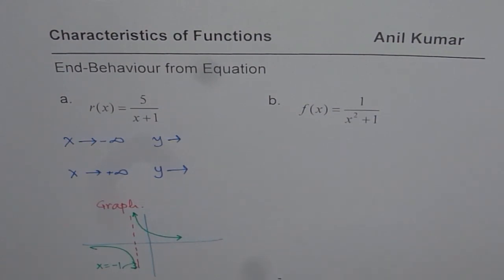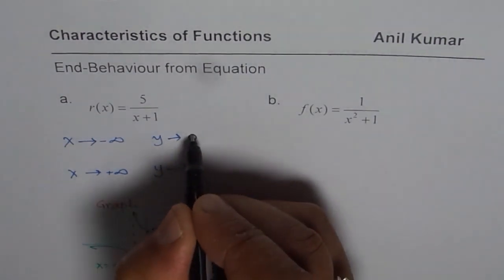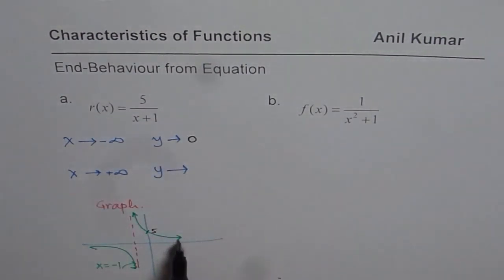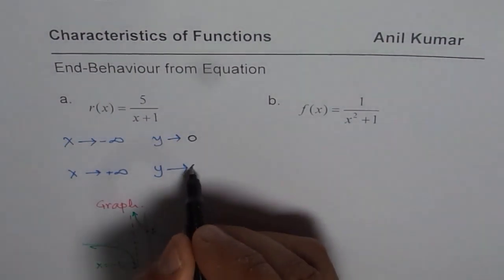So from this graph, which has a y-intercept at 5, we can clearly see that as x approaches negative infinity, y approaches 0. And as x approaches positive infinity, y also approaches 0.